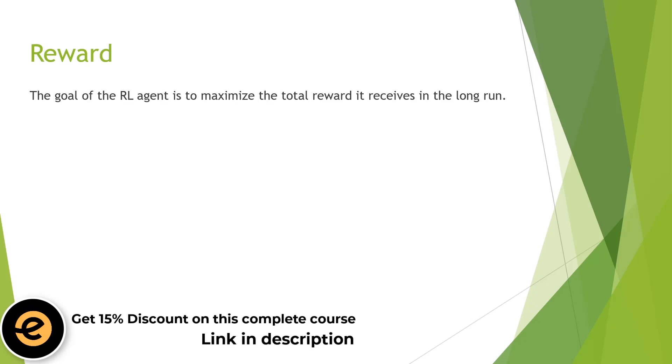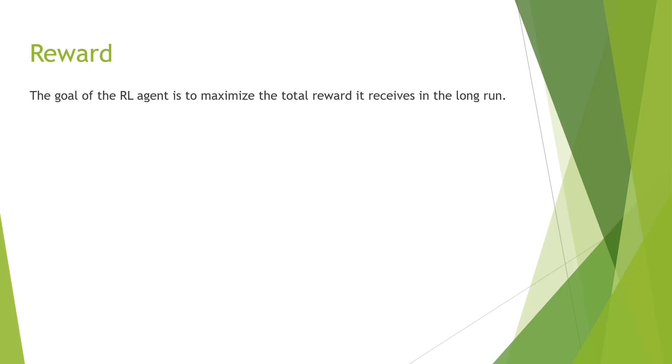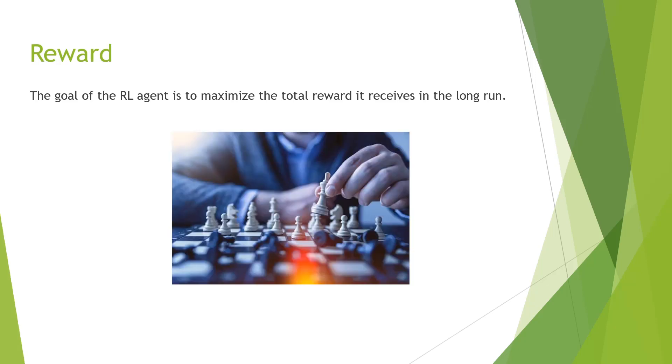As we know, at each time step the agent takes an action and gets a reward. We need to understand that the immediate reward that the agent receives can be small, but the total reward in the long run can be maximum. Take an example of the game of chess. A move can result in a loss of a piece, which is bad as an immediate reward, but it can be good in the long run to win the game.